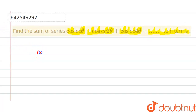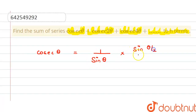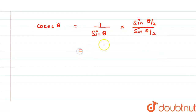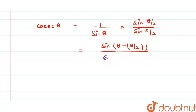Now, we know that cosec θ equals 1 upon sin θ. And here, I am multiplying and dividing by sin(θ/2). This is sin(θ/2). Now, here θ/2 can be written as θ minus θ/2. Then this will again be θ/2, divided by sin θ into sin(θ/2).